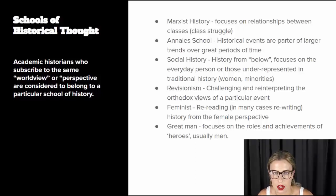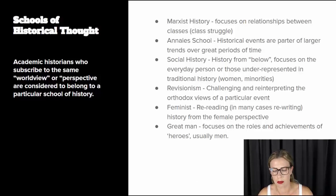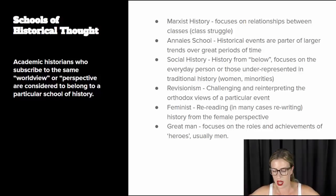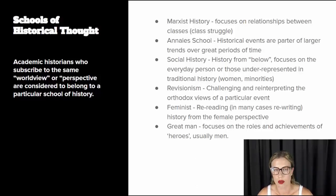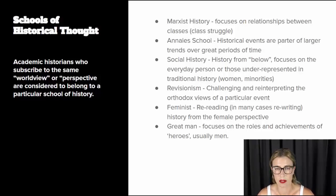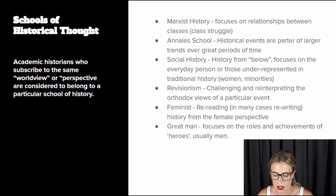On the screen you can see some examples of schools of historical thought. For example, Marxist history focuses on the relationship between classes and class struggle. There's the Annals school, where historical events are seen as part of a larger trend over great time periods — they don't focus on a single event but on the wider context. There's social history, which is history from below, focusing on the everyday person or those underrepresented in traditional history, such as women and minorities. There's revisionism, which challenges and reinterprets the orthodox views of a particular event. There's feminist history — re-reading and rewriting history from the female perspective. And then there's great man history, which focuses on the roles and achievements of heroes, usually men.